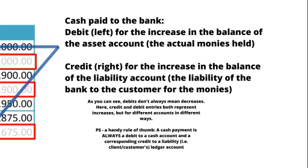For an asset ledger account — in this case the money held by the bank, or its cash account — an increase is a debit and a decrease is a credit. The corresponding entries for the liability account, i.e. the ledger account in your name, are a credit for an increase and a debit for a decrease.